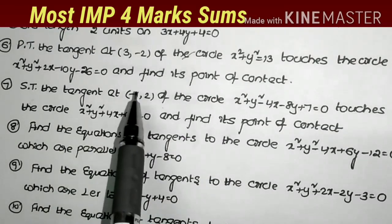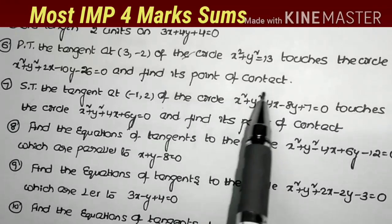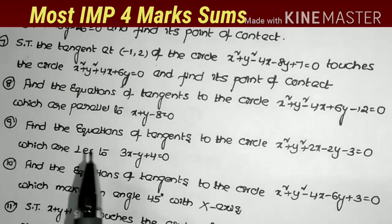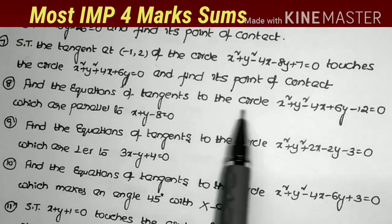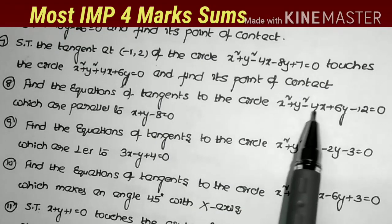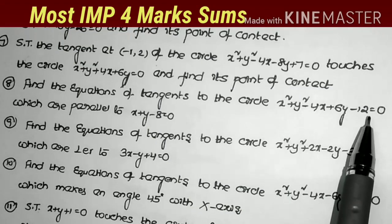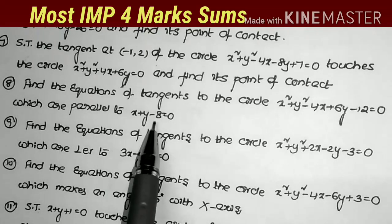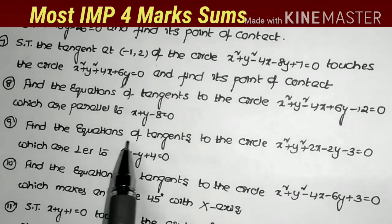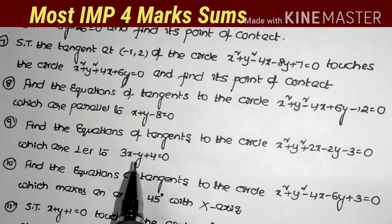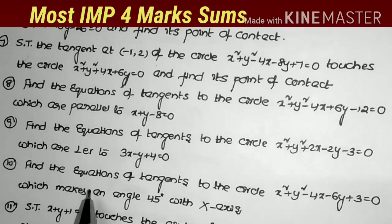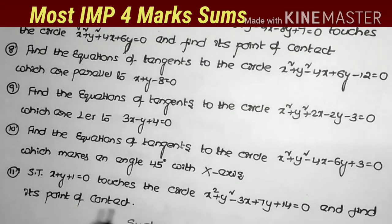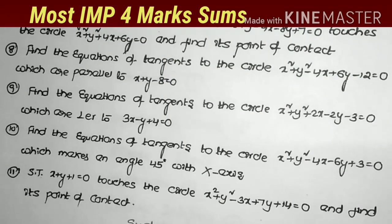Same model: show that the tangent at (-1, 2) of the circle touches the second circle. Next: find the equations of the tangents to the circle x² + y² - 4x + 6y - 12 = 0 which are parallel to the given line. Next: find the equations of tangents which are perpendicular to the given line. Next: find equations of tangents which make an angle of 45 degrees with the x-axis. Last: show that the line x + y + 1 = 0 touches the circle and find its point of contact.